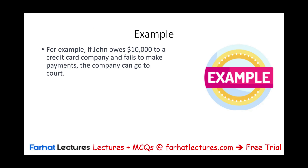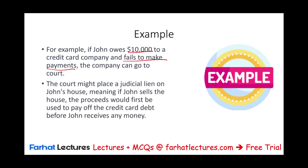Another example: if John owes $10,000 to a credit card company and fails to make a payment, the company can go to court. The court might place a judicial lien on John's house, meaning if John sells the house, the proceeds will have to go first to the credit card company before John receives any money. This is basically what a lien is.